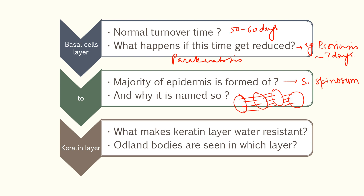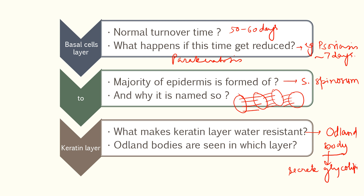Now, what makes the keratin layer water resistant? There is a body named the Odland body. It secretes hydrophobic glycolipid, which covers the keratinocyte and makes it water resistant. And in which layer are Odland bodies seen? These are seen in the granular layer.